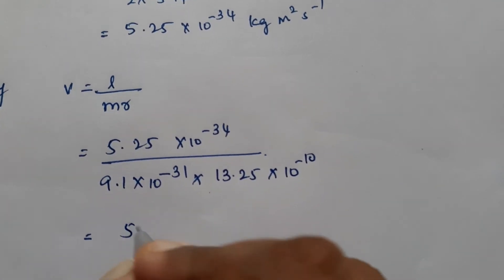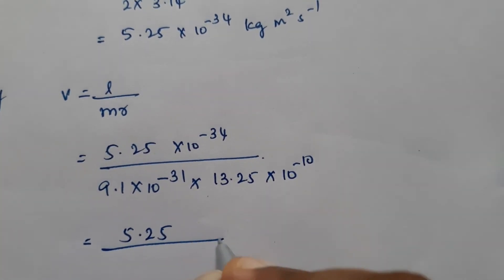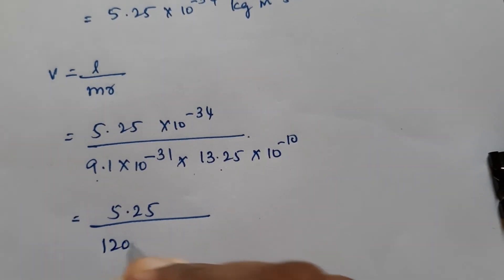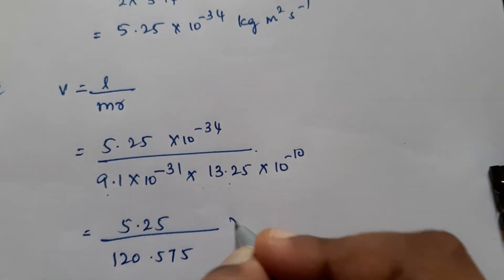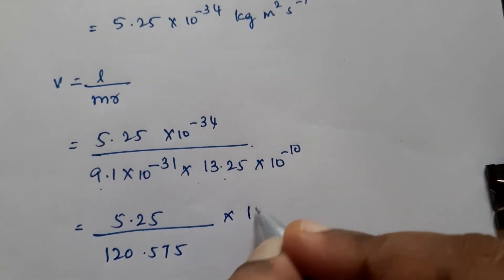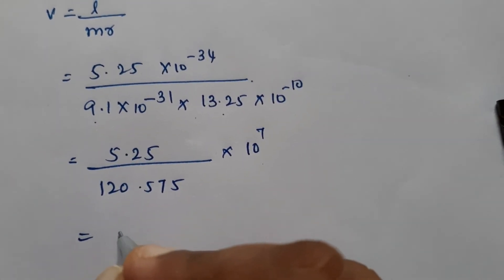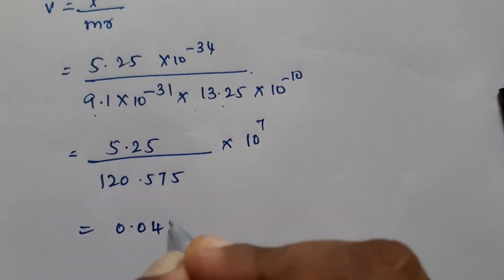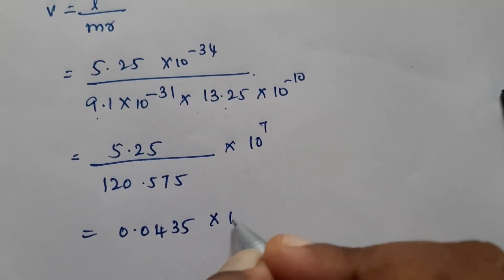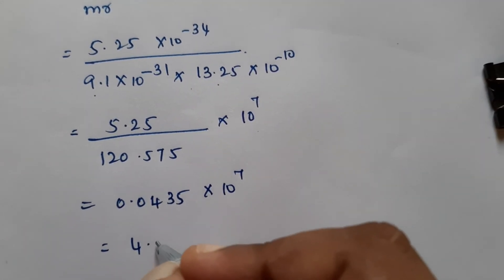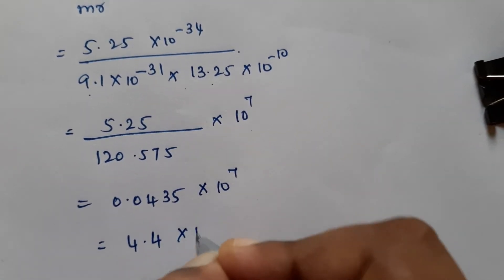So you will be getting 5.25 divided by 9.1 into 13.25 is 120.575. If you add all the powers, you will be getting 10 raised to 7. So this value is 0.0435 into 10 raised to 7, which can be written as 4.4 into 10 raised to 7.